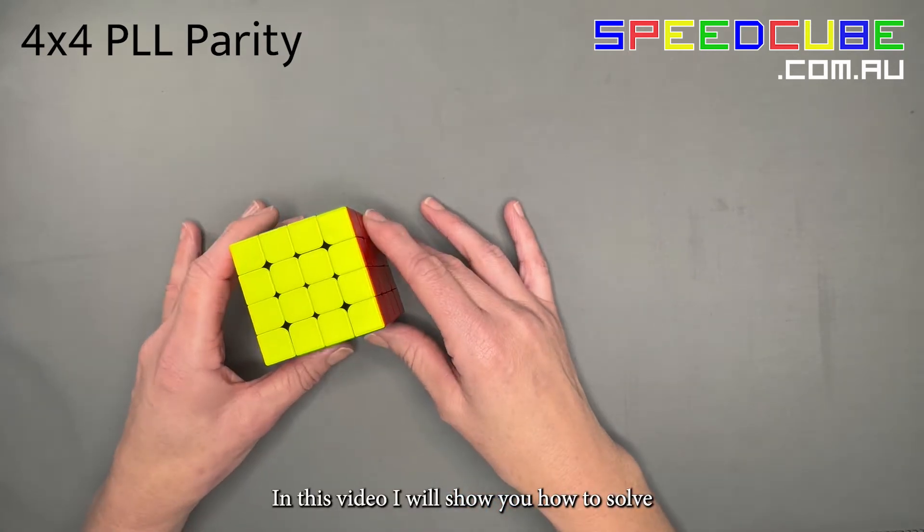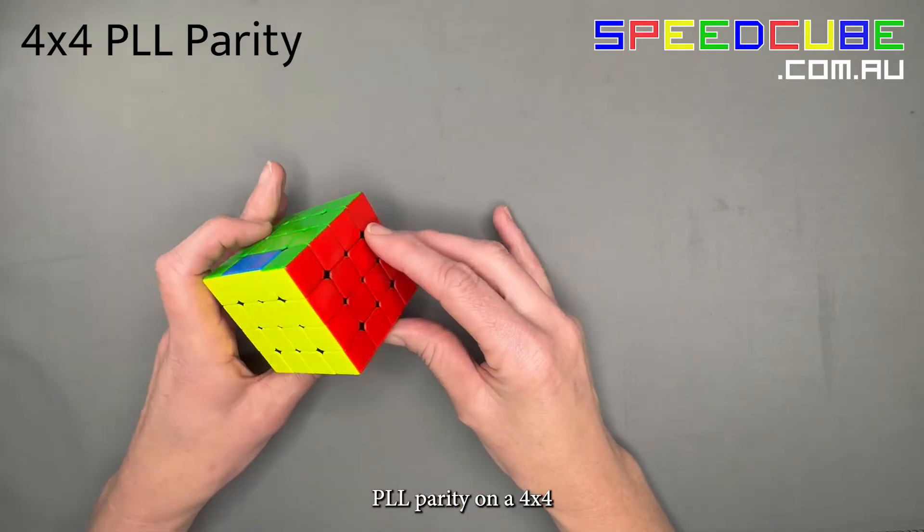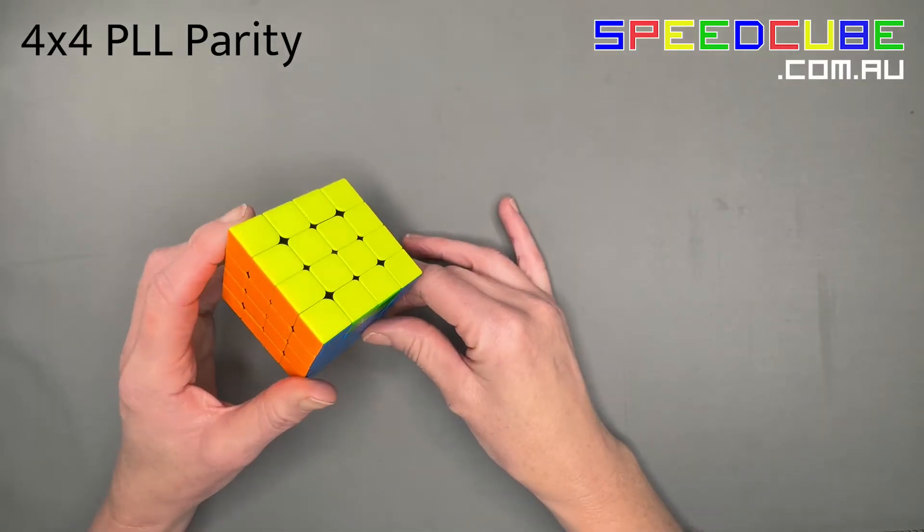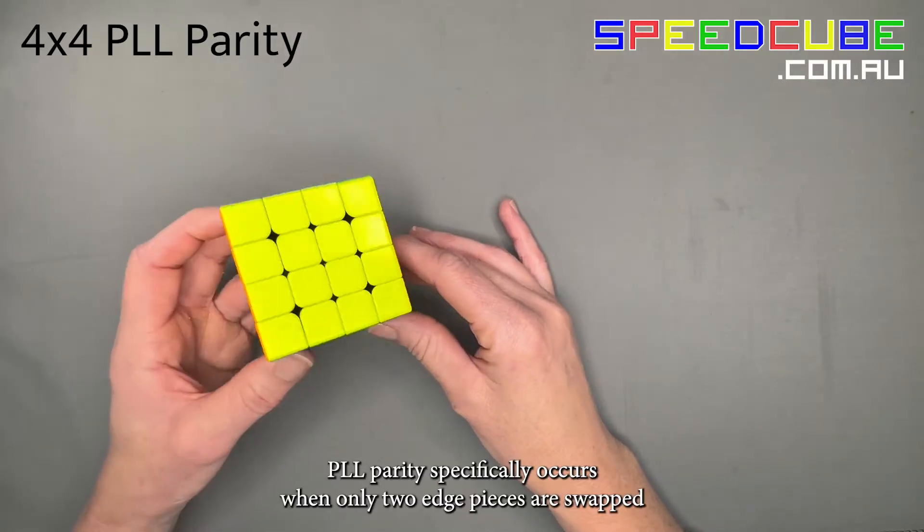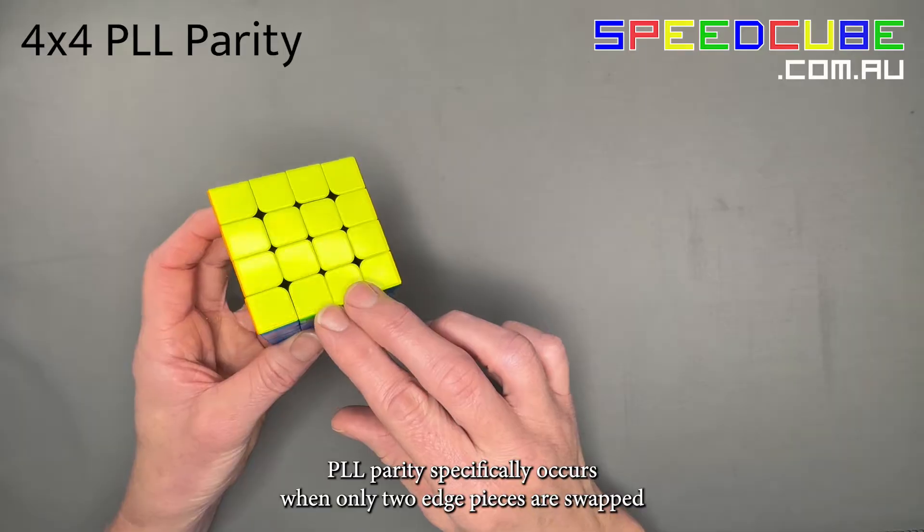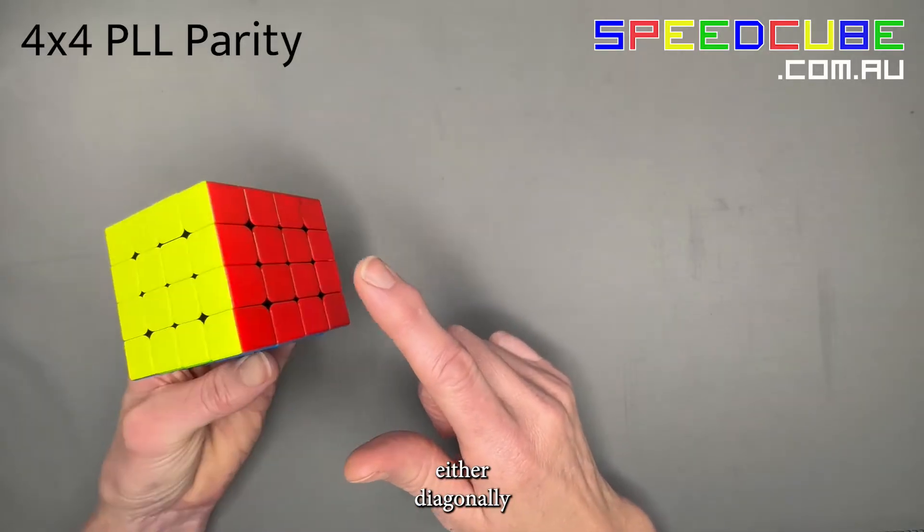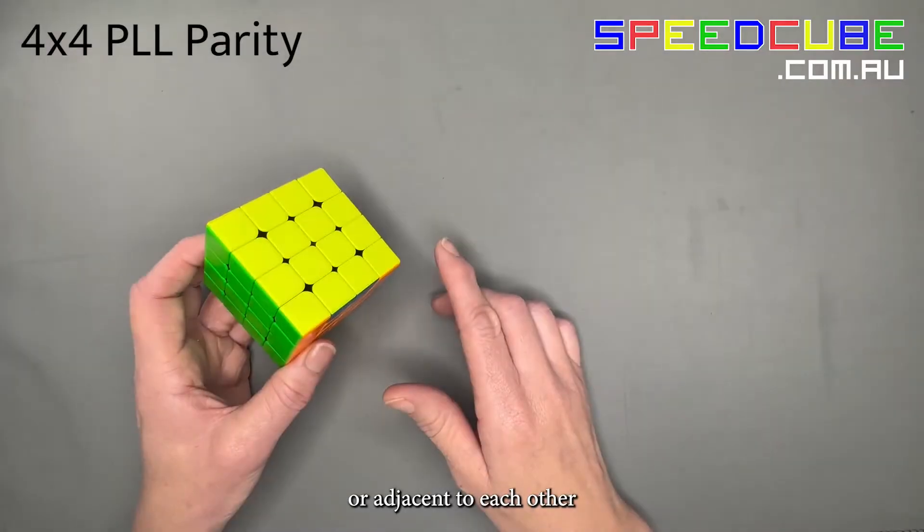In this video, I will show you how to solve PLL parity on a 4x4. PLL parity specifically occurs when only two edge pieces are swapped, either diagonally or adjacent to each other.